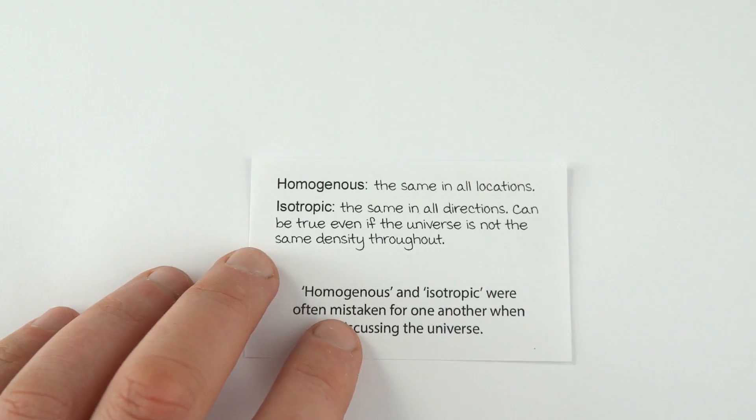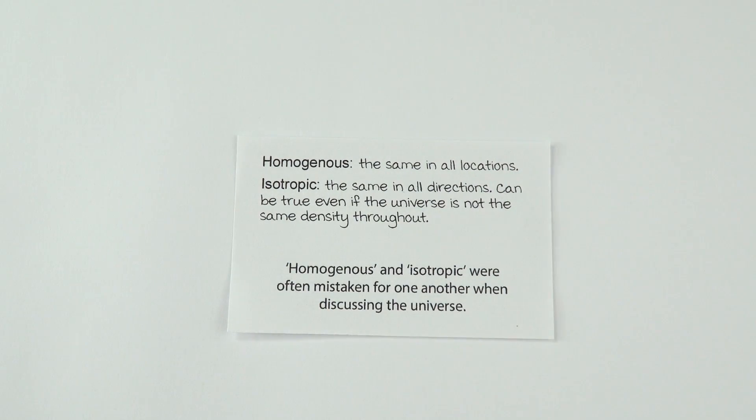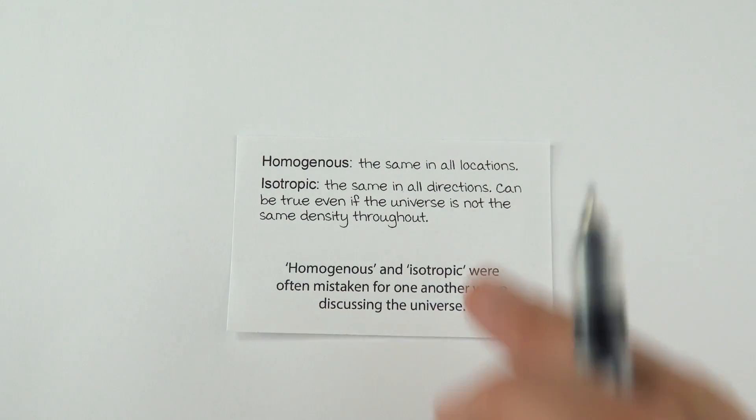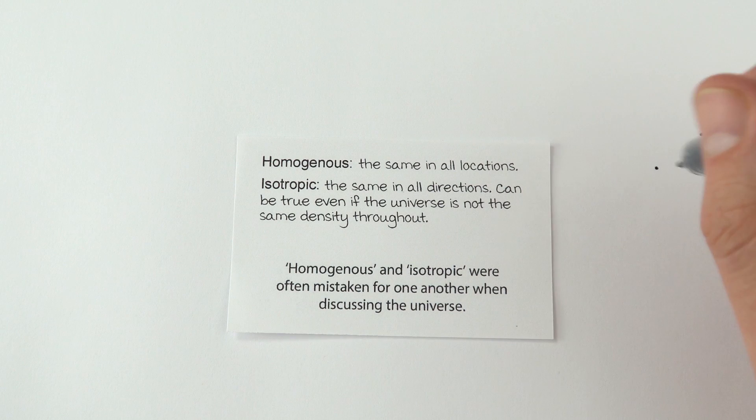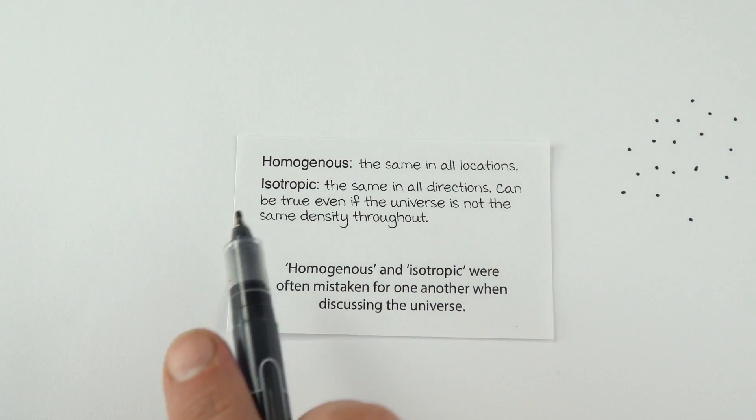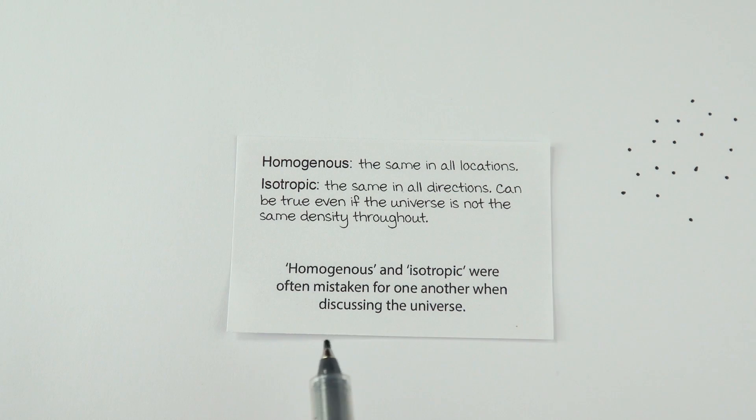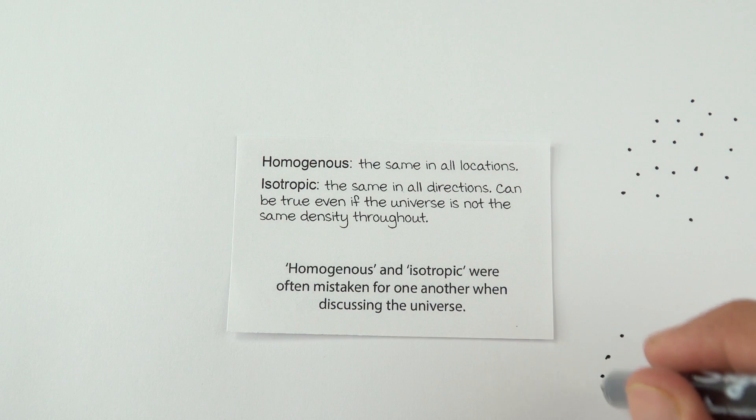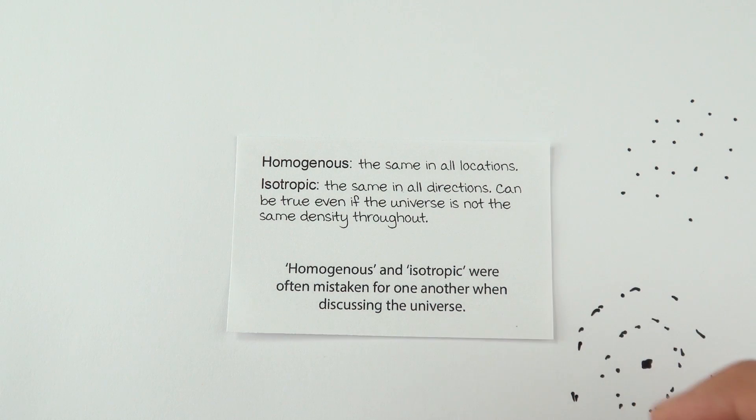Something else which came up was about the universe. It's talking about the difference between homogenous and isotropic. Something which is homogenous is the same in all locations. If we think about the density of the universe, it has the same kind of density, perhaps. Isotropic means that something is the same in all directions. The word iso means same.